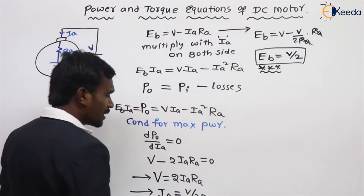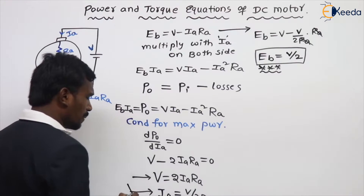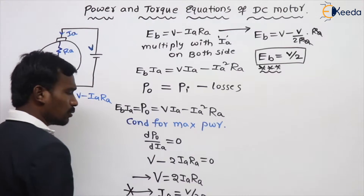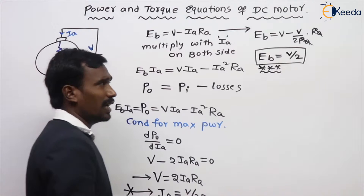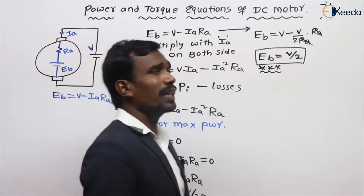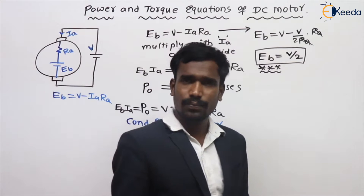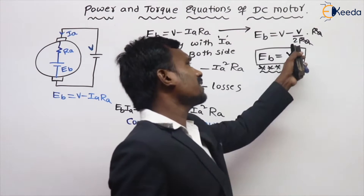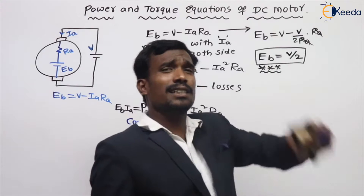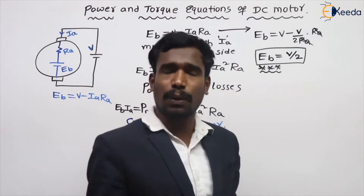So the condition for maximum power is EB equals V by 2, which is 50% of voltage. The armature current at maximum power is IA equals V by 2RA. These two are very important conditions.